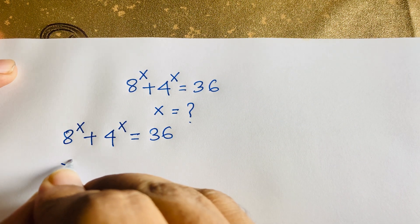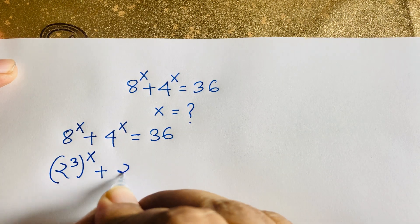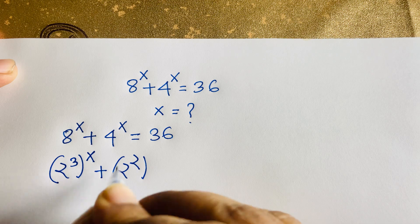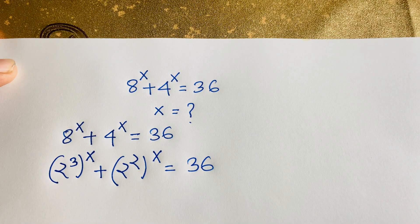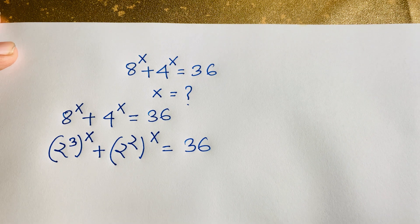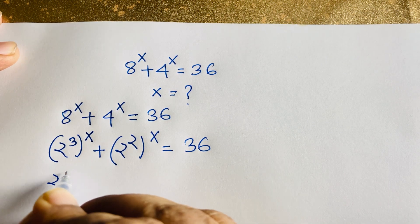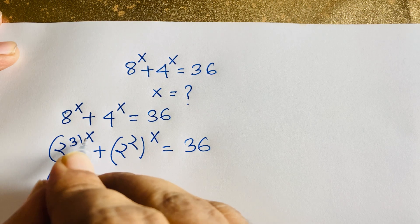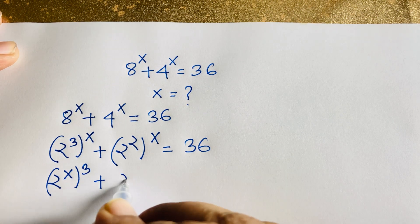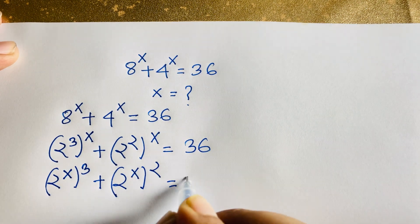So 8 to the power x — I can say it will be 2 to the power 3, whole to the power x, plus 4, which will be 2 to the power 2, whole to the power x, is equal to 36. Now according to exponential rules, I move the exponent inside the bracket, so it will be 2 to the power x, whole to the power 3, plus 2 to the power x, whole to the power 2, is equal to 36.